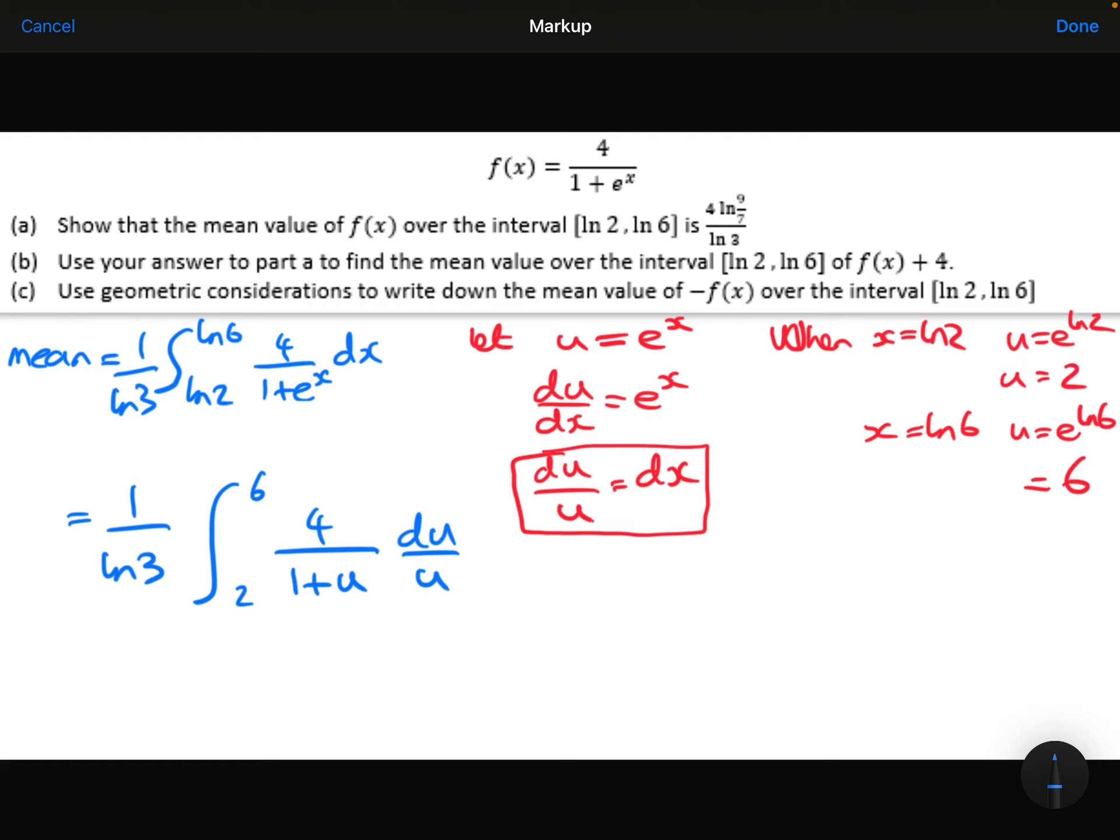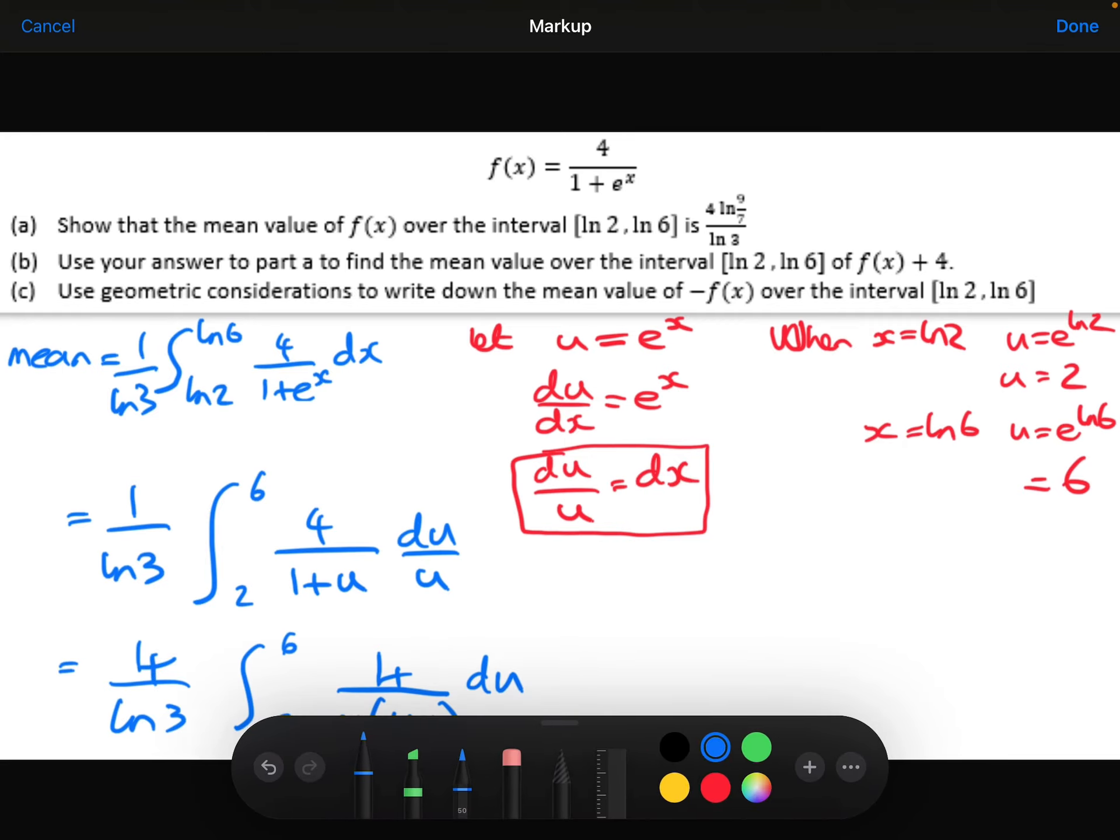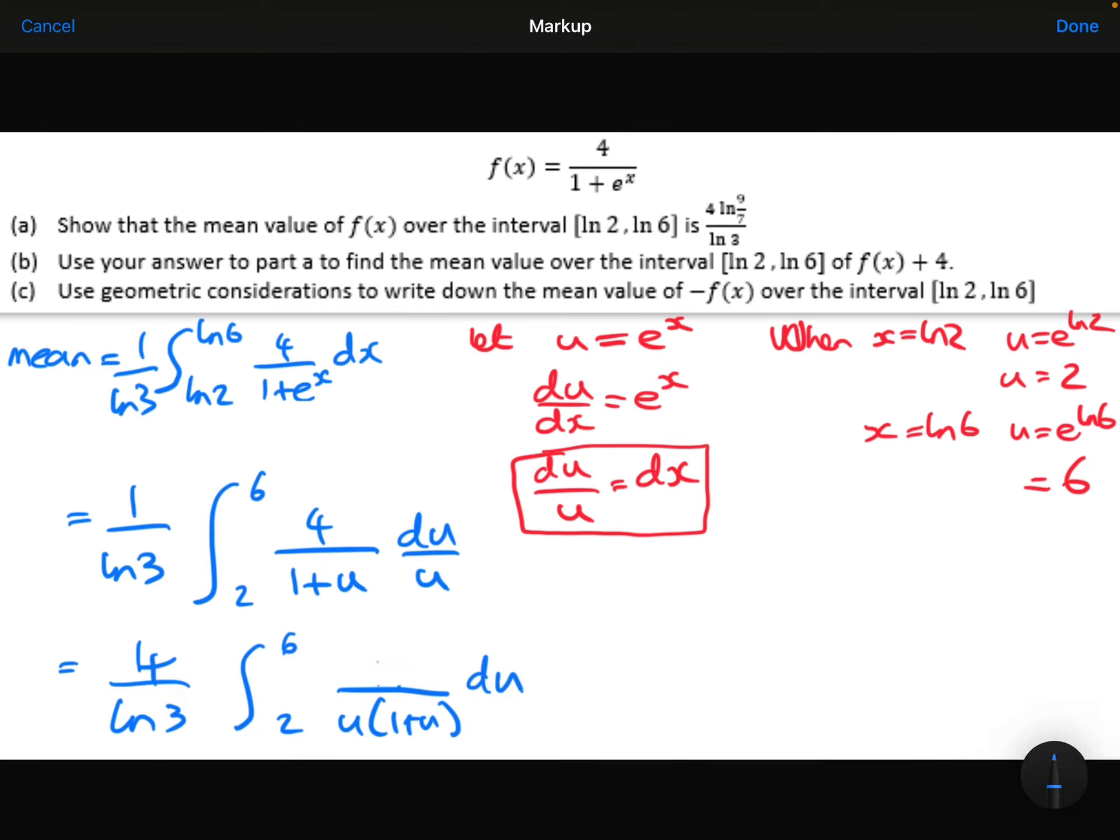Okay. Well, we've got rid of the exponential now. But we've still got a quite awkward thing to do because basically we've got 4 over u times 1 plus u du. I'm going to take that 4 outside the integral to make my life a little bit easier. Because the next stage of this is going to be partial fractions. Because I've got 1 over u times 1 plus u.